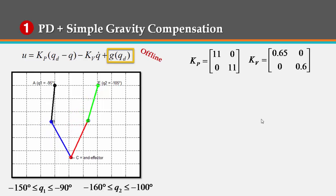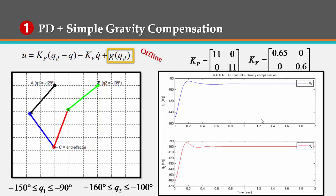We choose the singularity-free region where q1 is between negative 150 and negative 90 degrees, and q2 is between negative 160 and negative 100 degrees. And the simulated results are depicted on the following figure, which shows satisfactory agreement with the requirements.